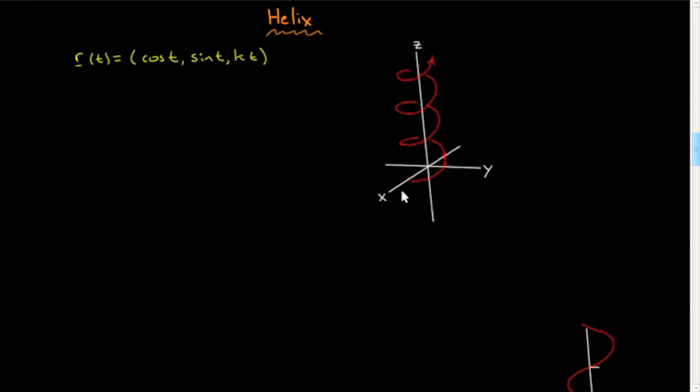We know from sketching parameterized curves that three dimensions can be somewhat challenging, and putting on velocity and acceleration vectors can be perhaps even more so, but I want to do one example.